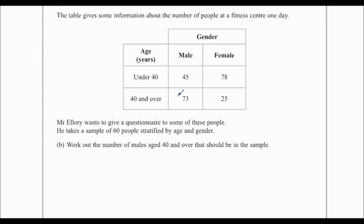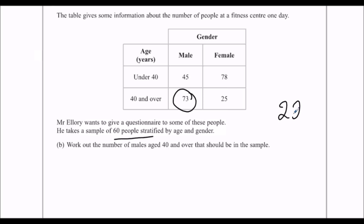We have a sample of 60 people, and we want to know how many males aged 40 and over. That's this one. To find the fraction that this group represents, we need to know how many there are in total — we need to add up all four of these numbers, and that gives us 221.